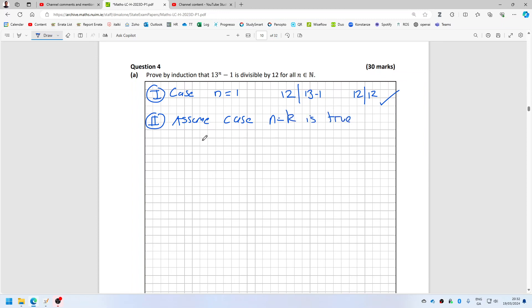So that is, you can divide 12 into 13 power k minus one. Step three: we're required to prove case n equals k plus one is true.